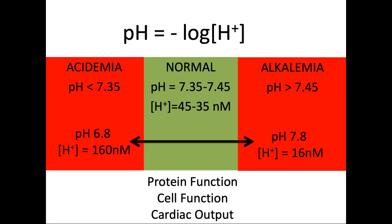Just to give you a sense, the limits of life would be pH 6.8 — below that, it's not really compatible with life. That corresponds to a proton concentration of 160 nanomolar. On the other end, the highest pH we can tolerate is 7.8, which corresponds to a proton concentration of 16 nanomolar.